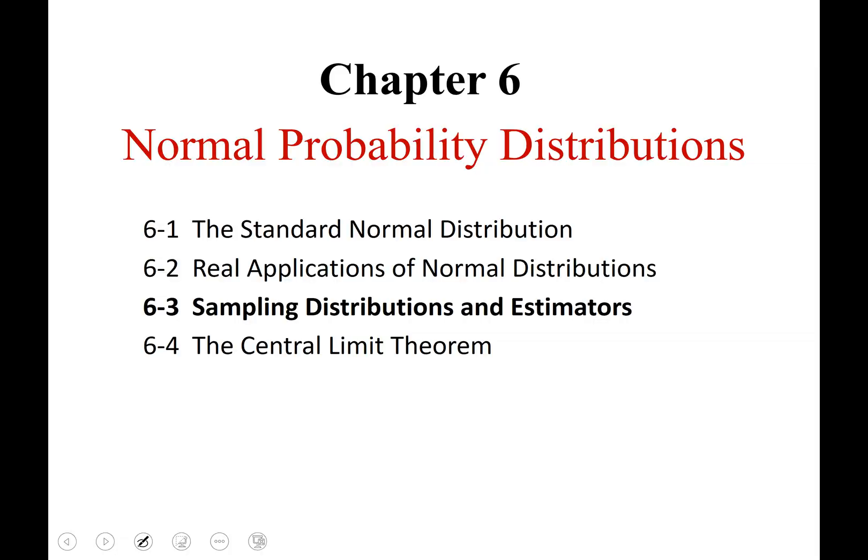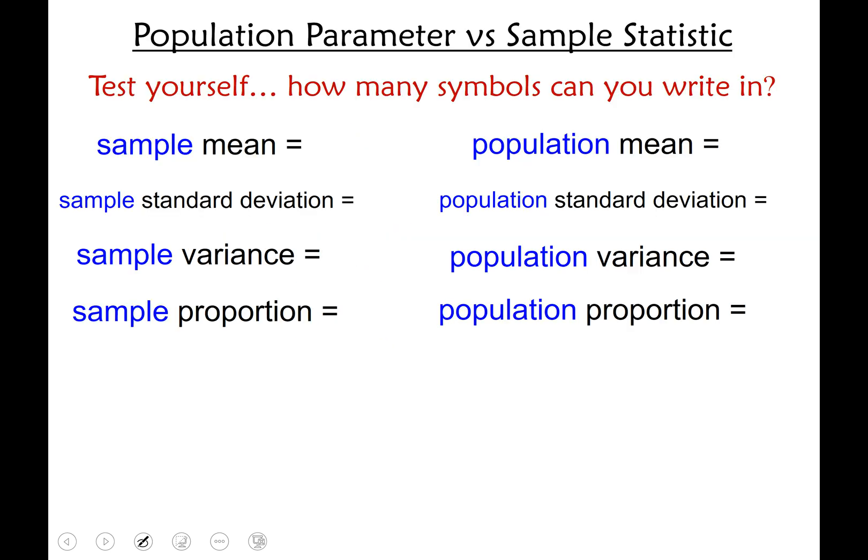Hello statistics students, this is Jamie Aimee and this video is our discussion on 6.3 and 6.4. Section 6.3 is on sampling distributions and estimators. We know that there is a difference between a population parameter and a sample statistic, so before we move on I want you to test yourself and make sure you know what the different symbols are.